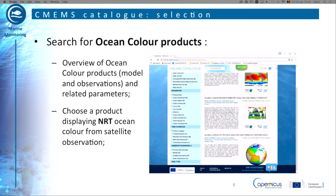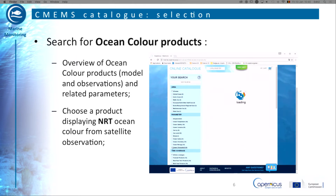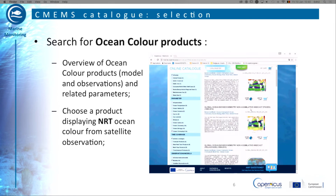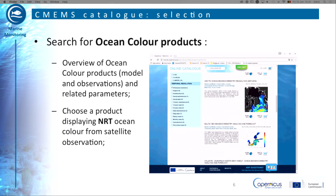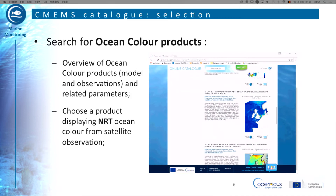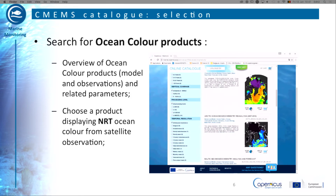A first approach consists in selecting the products resulting from modelling. Biogeochemical models mostly provide mass concentration of chlorophyll in seawater only. To do so, we select the Models product. Each modelling area provides such information. Then we click on Ocean Chlorophyll to select only Biogeochemical models.